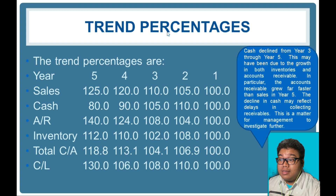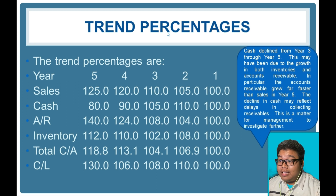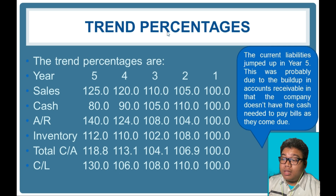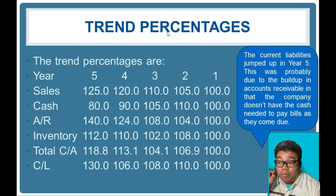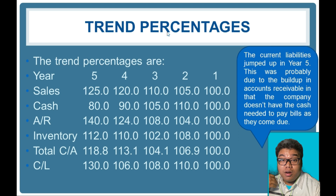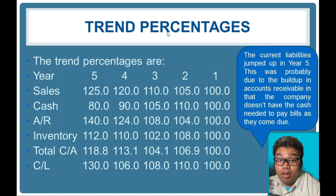What we try to analyze in trend percentages are the consistencies between balances. Current liabilities jumped in year five. This is because, as a result of the increase in inventory and accounts receivable, we are less able to pay down debts. Also, since sales increased, we need to purchase more items, which would result in a higher payable balance to suppliers.